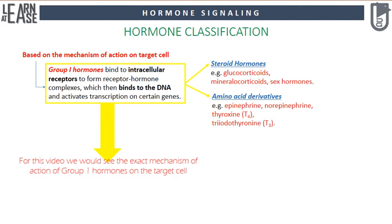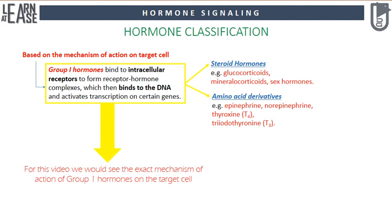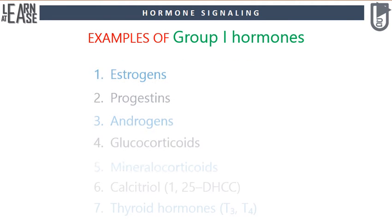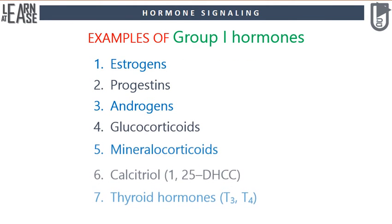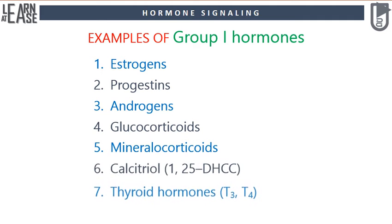For this video we will see the exact mechanism of action of Group 1 hormones on the target cell. Examples of Group 1 hormones are estrogens, progestins, androgens, glucocorticoids, mineralocorticoids, calcitriol, and thyroid hormones. Later in this video we will also see the exact function of each of these hormones.